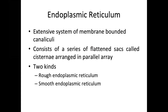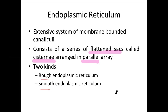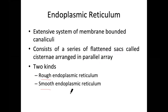The endoplasmic reticulum (ER) comes in two kinds: rough and smooth. The ER consists of flattened sacs called cisternae arranged in parallel orientation. The rough ER is called rough because of the presence of ribosomes; the smooth ER is called smooth because of the absence of ribosomes.